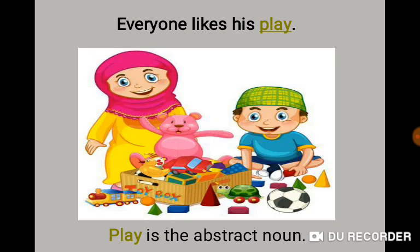Everyone likes his play. Look at this picture — these children are playing. Play is the abstract noun. Abstract noun means something you cannot touch and feel. Coming back to the example: everyone likes his play — play is the abstract noun. So far, we have seen the types of nouns: collective noun, material noun, and abstract noun.